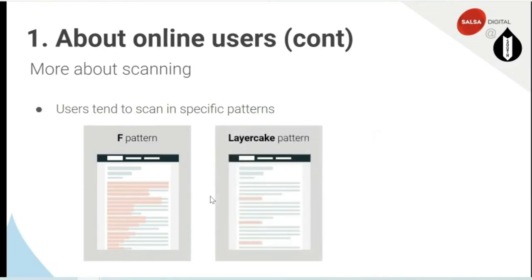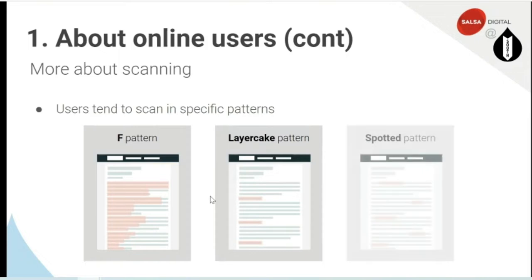The other common pattern is the layer cake pattern, where people scan the subheadings to find information that's relevant to them or that they're looking for. And the other most common pattern is the spotted pattern, where people are drawn to different things — it might be headings, keywords, hyperlinks, bolded words — all those things that draw the user's eyes to that particular word or section of the page.